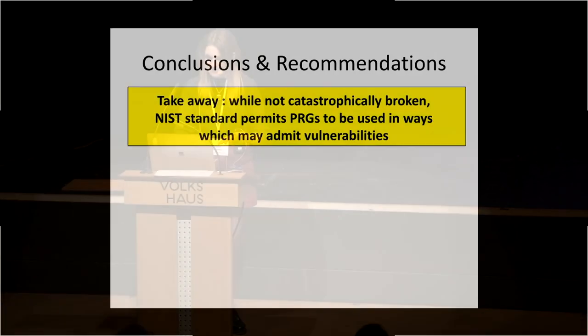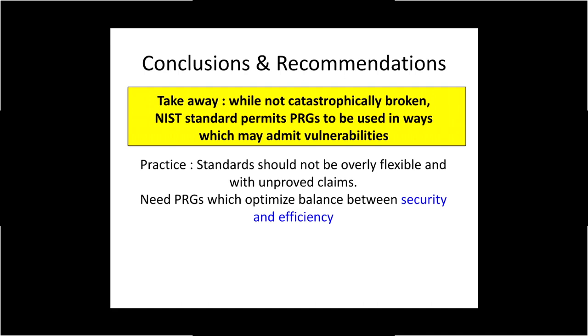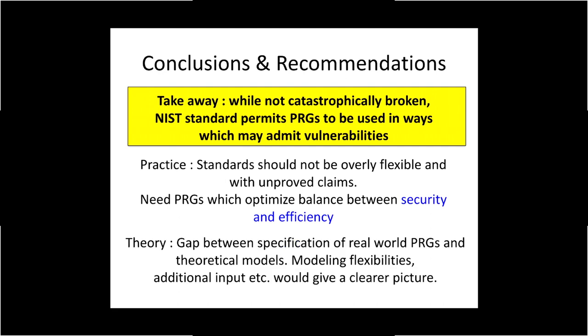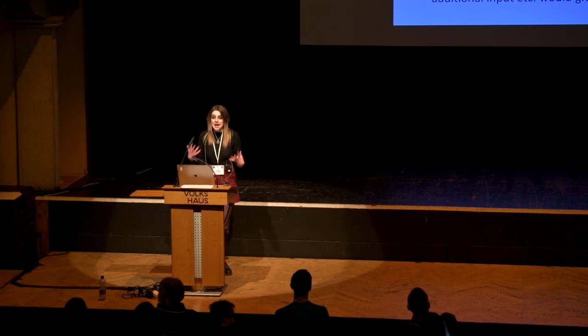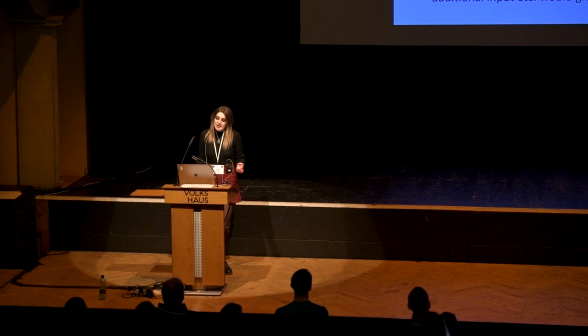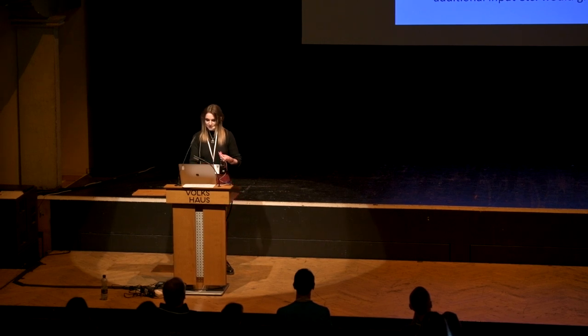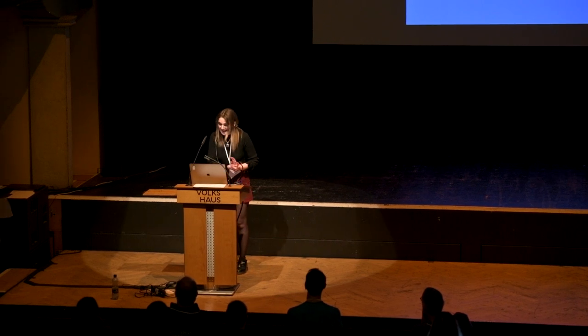To wrap up: while we're not saying these generators are totally broken, the overly flexible standard allows them to be used in ways which may admit vulnerabilities. Our recommendations are: firstly, standards should not be overly flexible, and any security claims should be proved before algorithms are standardized. At the same time, all the use cases pointed out as less secure are desirable in terms of efficiency, so designing PRGs which achieve an optimal balance between security and efficiency is an important direction for future work. Finally, on the theoretical side, there's a gap between how PRGs look in theory and how they're specified in practice, so making sure our theoretical models adequately capture real-world PRGs — rather than abstracting away messy details — is a really important step. We're putting a paper on ePrint next week with all the details.